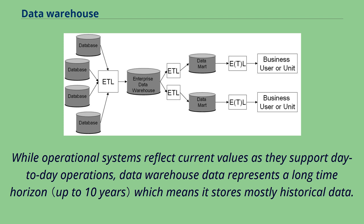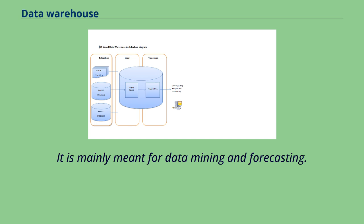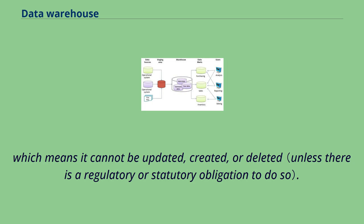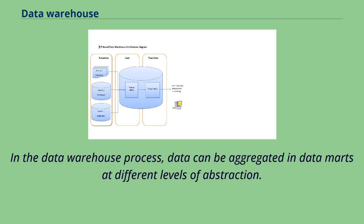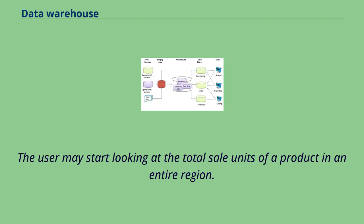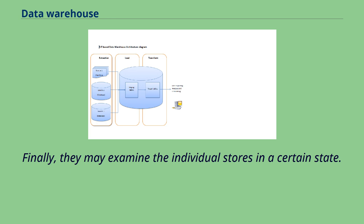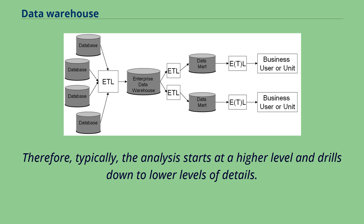While operational systems reflect current values as they support day-to-day operations, data warehouse data represents a long-time horizon, meaning it stores mostly historical data and is mainly meant for data mining and forecasting. The data in the data warehouse is read-only, which means it cannot be updated, created, or deleted. In the data warehouse process, data can be aggregated in data marts at different levels of abstraction — for example, a user may start looking at total sale units of a product in an entire region, then look at states, and finally examine individual stores. Typically, the analysis starts at a higher level and drills down to lower levels of detail.